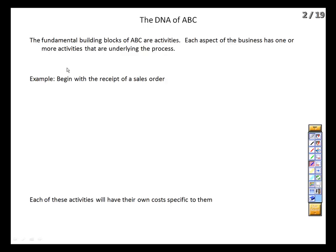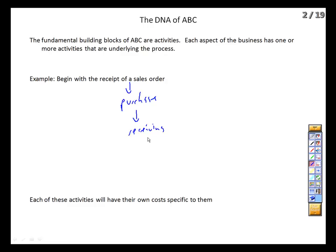That received order might trigger a raw materials purchase, and that purchase would then trigger the receiving department and testing. And then we finally get to the final assembly. We can see as we go through this process exactly what is going on under the hood.